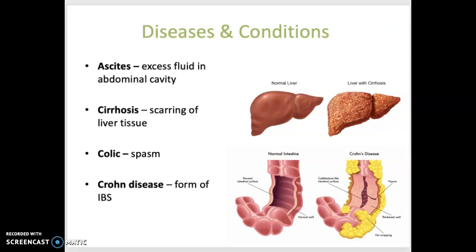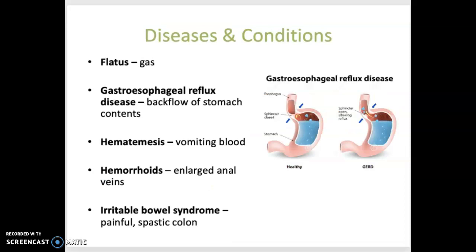Crohn's disease is a form of inflammatory bowel disease that can cause fever, cramping, and diarrhea. Flatulence is gas production in the GI tract that causes air to be expelled through the rectum. Gastroesophageal reflux disease is the backflow of the stomach contents into the esophagus due to a malfunction of the lower esophageal sphincter. Hematemesis is the vomiting of blood. Hemorrhoids is the enlargement of veins in the anal canal, often caused by increased abdominal pressure.